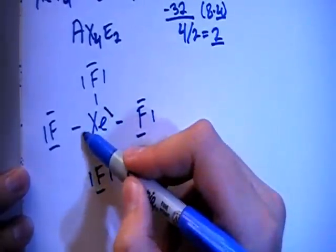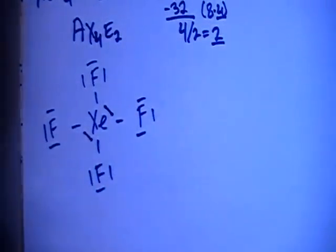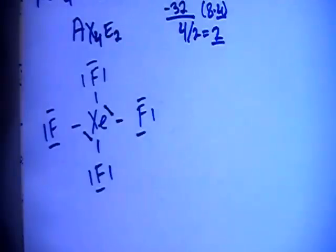So let's put a non-bonding pair there and there. And at first you might think that this is wrong because you can't have more than 8 electrons on an atom. But because xenon has access to the d orbital, it can actually hold more than 8. So this is why all of these electrons are able to sit on this xenon.